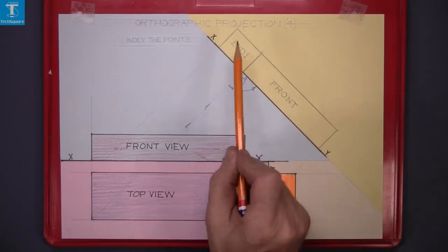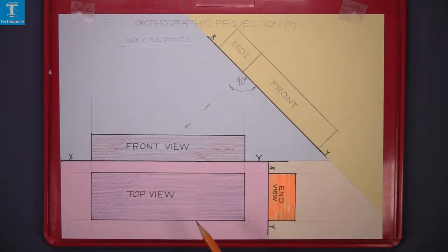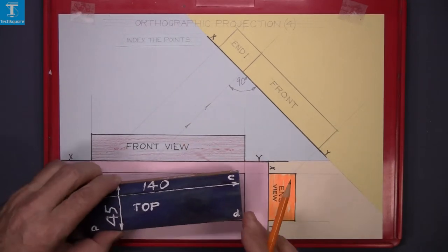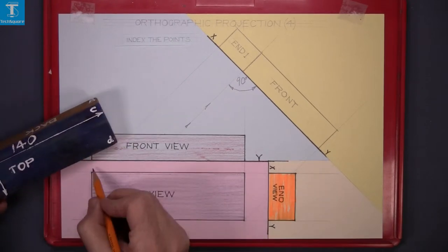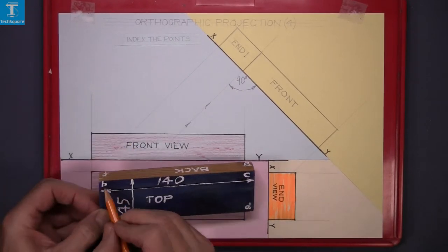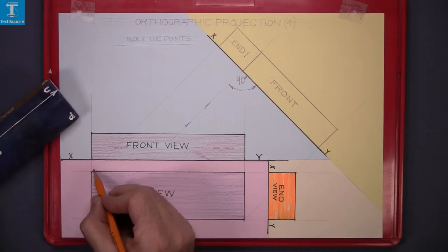Orthographic projection for indexing the points. Starting with the top of the piece, point B and F, B and F here.